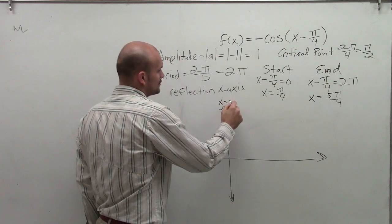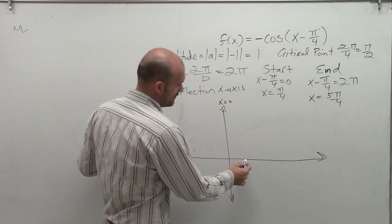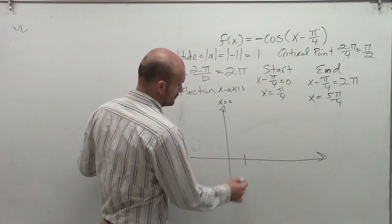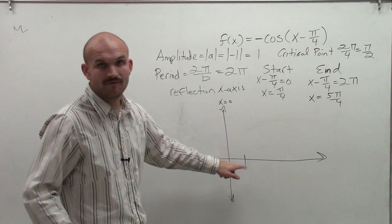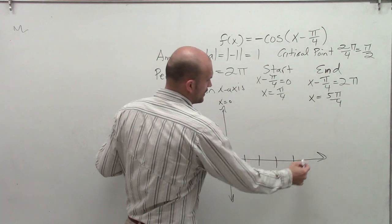So I'm first going to graph my x-axis and then I'll graph the y-axis. Now remember, the y-axis is when x equals 0. However, our starting point is going to be at x pi over 4. And then we're going to have four critical points from this measure. So I'm going to have 1, 2, 3, 4.